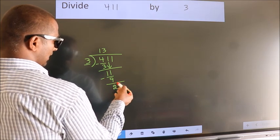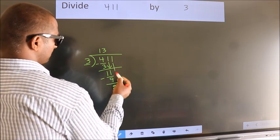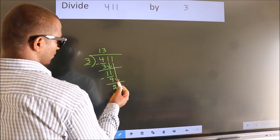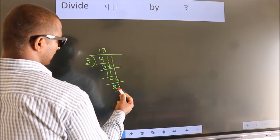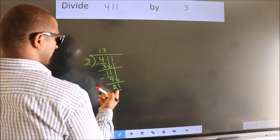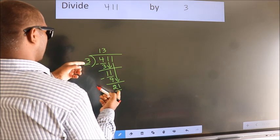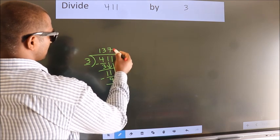We get 2. After this, bring down the beside number. So, 1 down. So, 21. When do we get 21? In 3 table. 3 sevens 21.